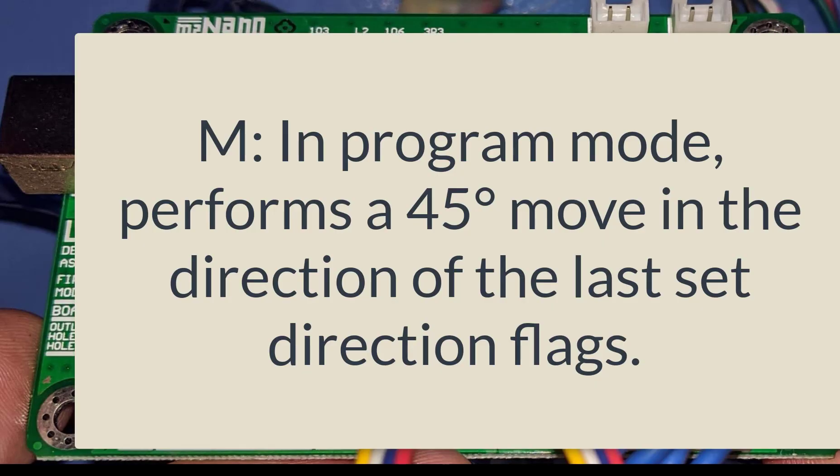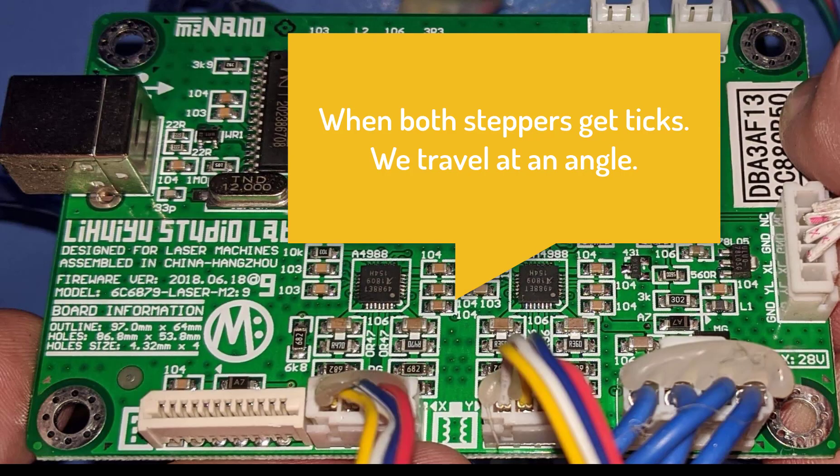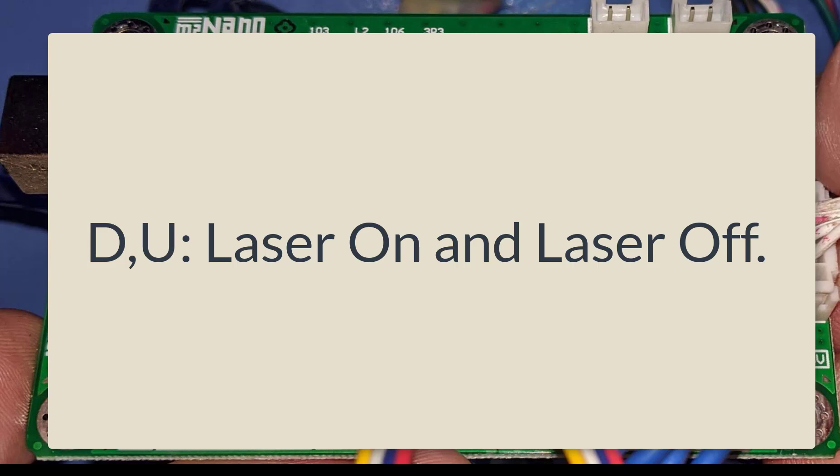The next command is M. In program mode it performs a 45-degree move in the direction of the last set direction flags — whichever way the stepper motors are set to go, M will go that direction. It doesn't set either stepper motor flag directly. We also have the D and U commands, probably down and up: D does laser on, U does laser off. These can be triggered in both program mode and rapid mode.